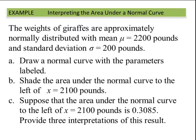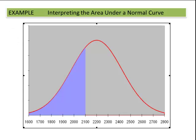Here's an example. The weights of giraffes are approximately normally distributed with a mean of 2200 pounds and a standard deviation of 200 pounds. Draw a normal curve with the parameters labeled, and shade the area under the curve to the left of x equals 2100 pounds. Here are parts A and B: we have our curve, the mean is in the middle at 2200, and we're looking at the area to the left of 2100, which is shaded in.